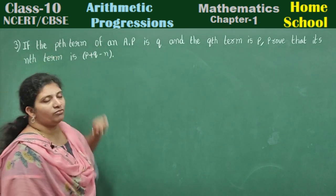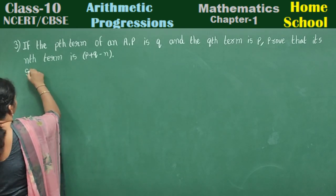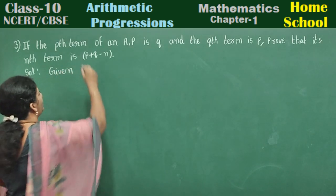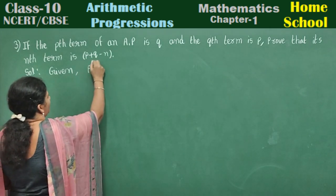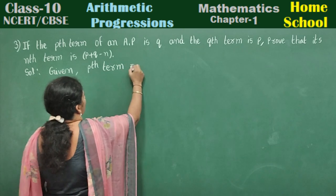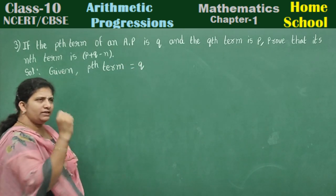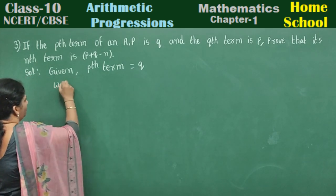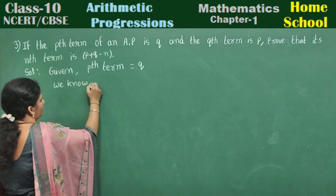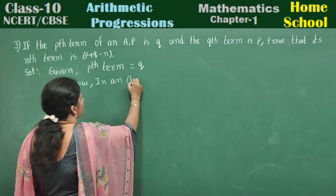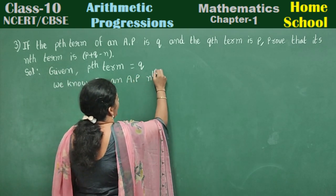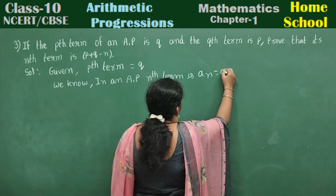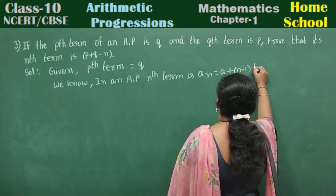If the pth term of an AP is q, what do you mean by this? Let's write the solution. Given in an AP, pth term is equal to q. We know in an arithmetic progression the nth term, or general term, is an equal to a plus n minus 1 into d.